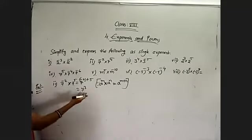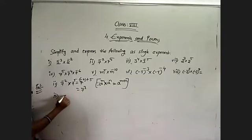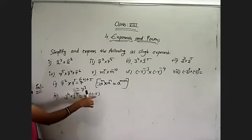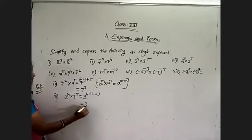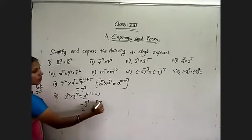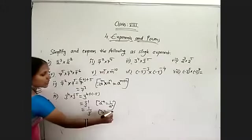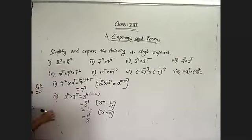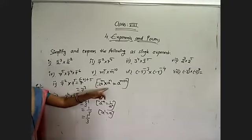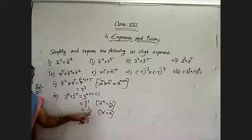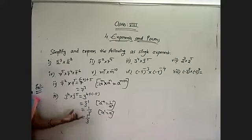Third question: 3 power 4 into 3 power minus 5. Using a power m into a power n equals a power m plus n: exponents 4 plus minus 5 equals minus 1. So 3 to the power of minus 1. This is in the form a power minus n, so simplify to 1 by 3 to the power of 1. Any power 1 equals that number itself, so 1 by 3 power 1 is simply 1 by 3. We used two formulas: first the multiplication law, then the negative exponent law.